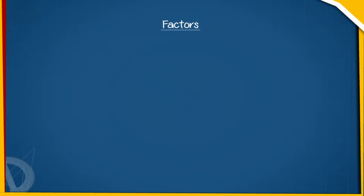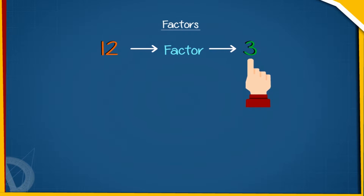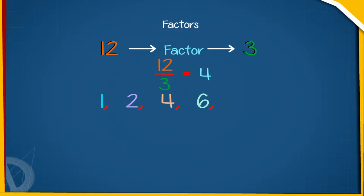Let us see an example. We take the number 12. 3 is a factor of 12 because 3 divides 12 exactly 4 times and does not leave any remainder. 12 also has more factors other than 3. These factors are 1, 2, 4, 6, and 12.